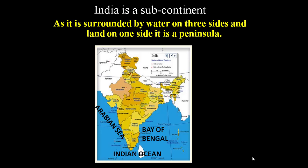India is called a peninsula because on three sides it is covered by water and one side it is covered by land. Towards the west is the Arabian Sea, towards the south is the Indian Ocean, and towards the east is the Bay of Bengal. These three water bodies cover three sides, and the remaining area is covered by land.